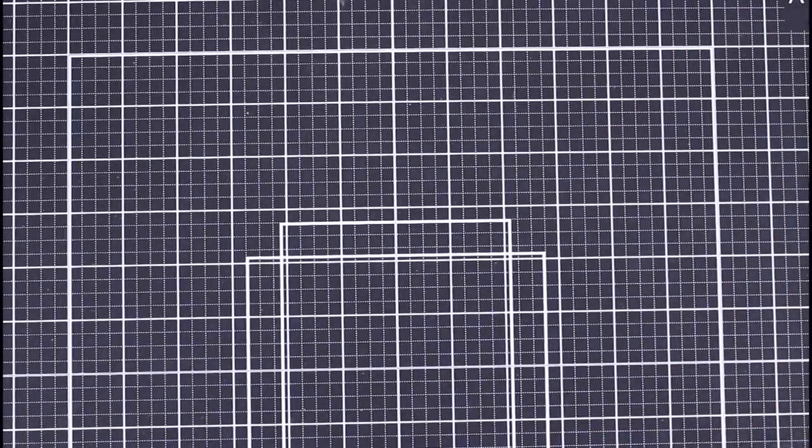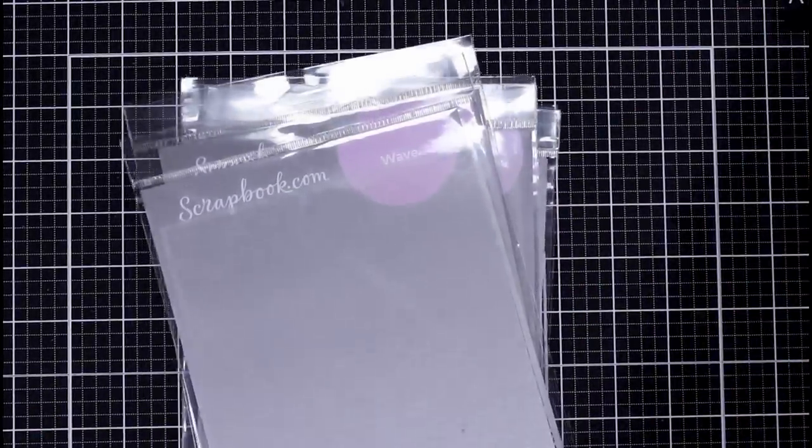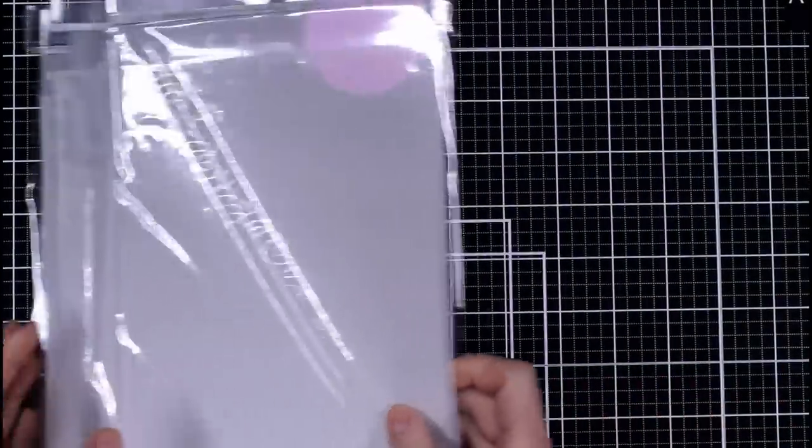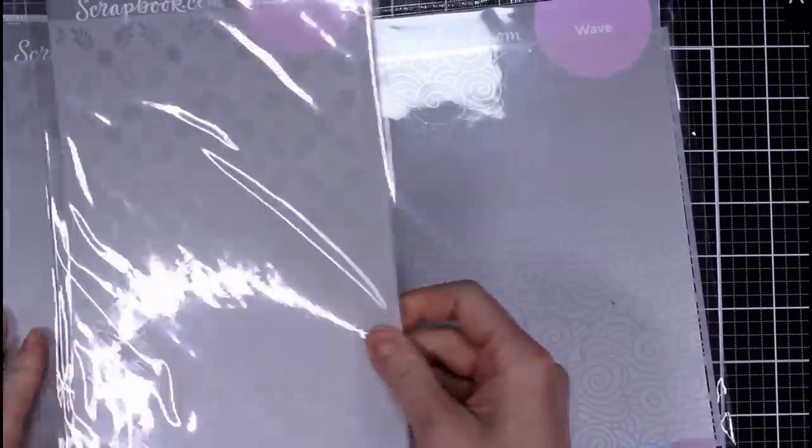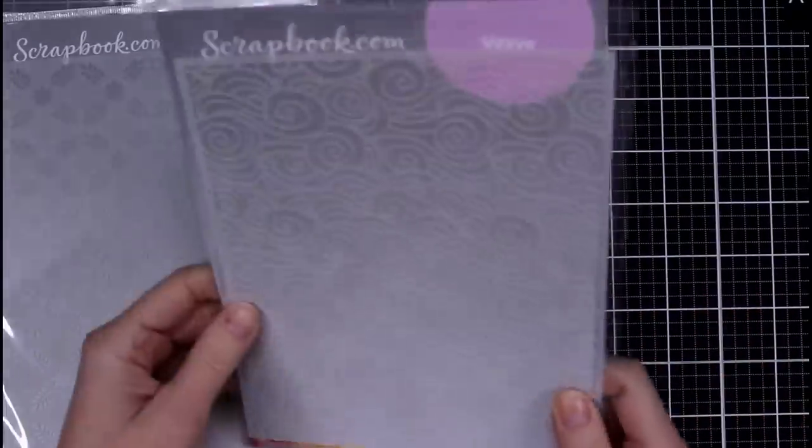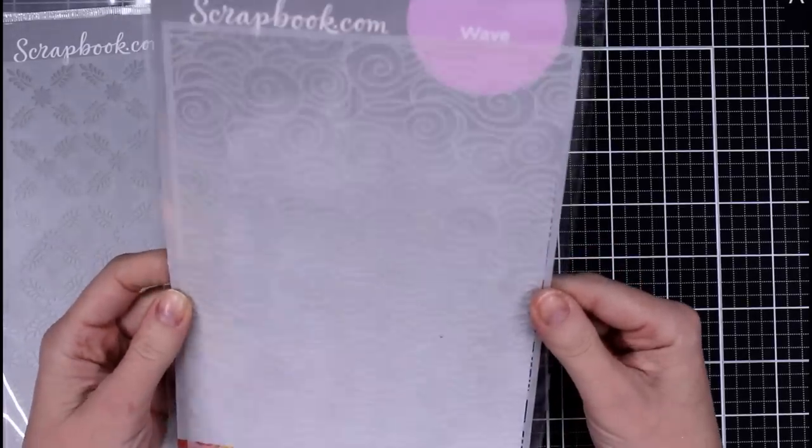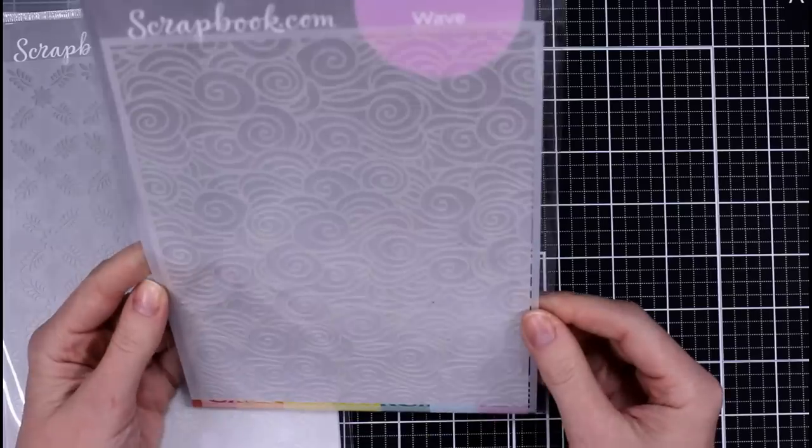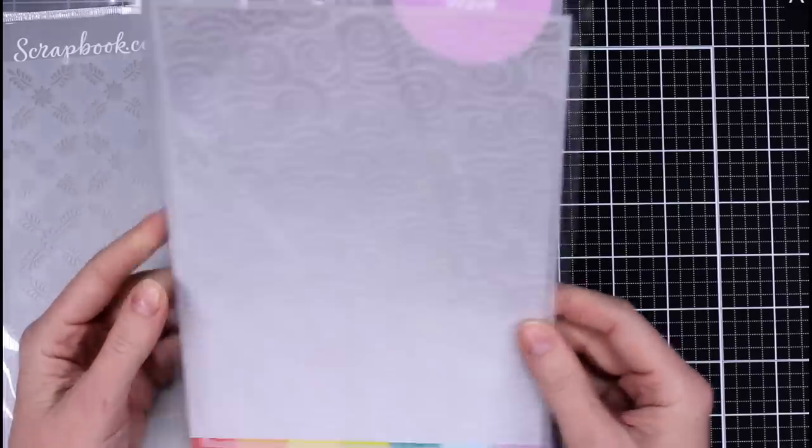Okay, so upcoming projects that I will be doing a video on: I was so excited to get the new stencils. I'm a huge fan of scrapbook.com stencils. I love the size. I can use them on slimline, A2, 5x7. I think they're great. This one right here is called Wave, and it's just a lot of swirlies, almost like waves. It's cool. That's going to be super fun to do in different colors and glitter.